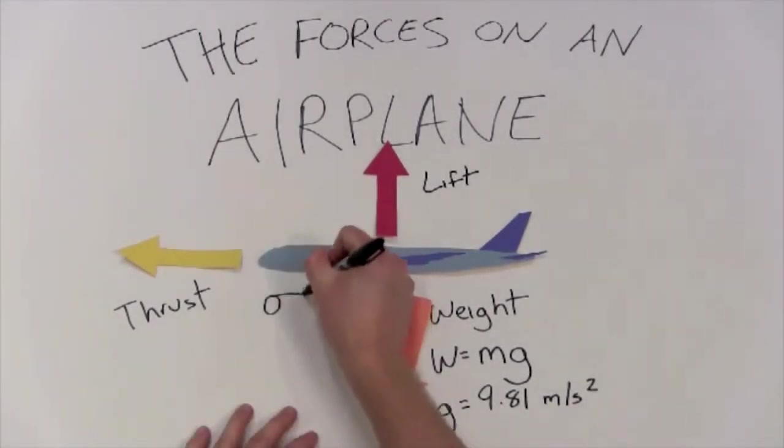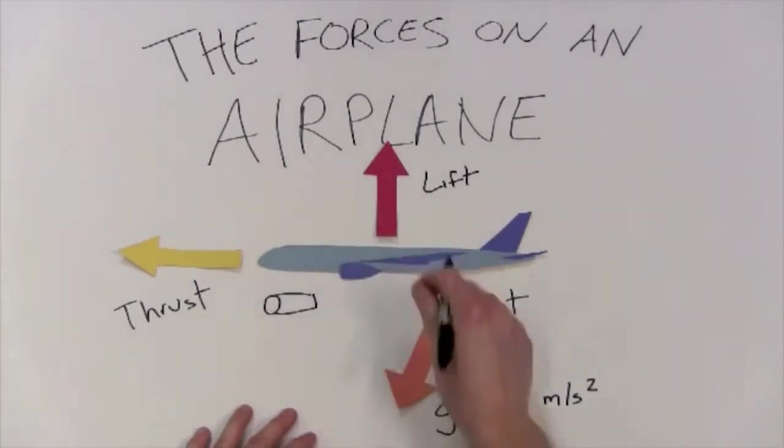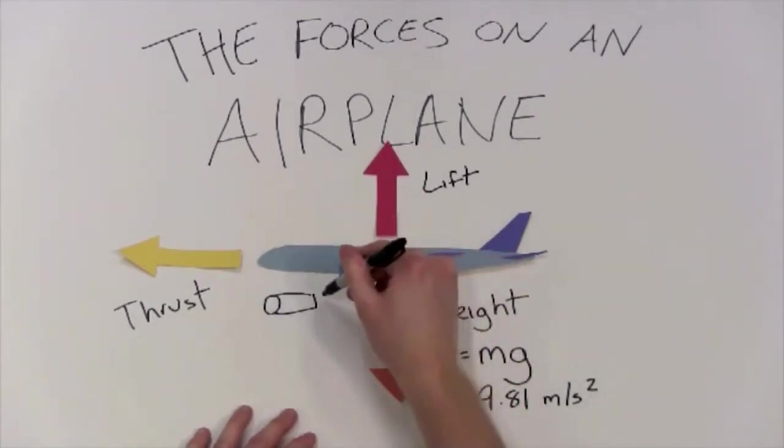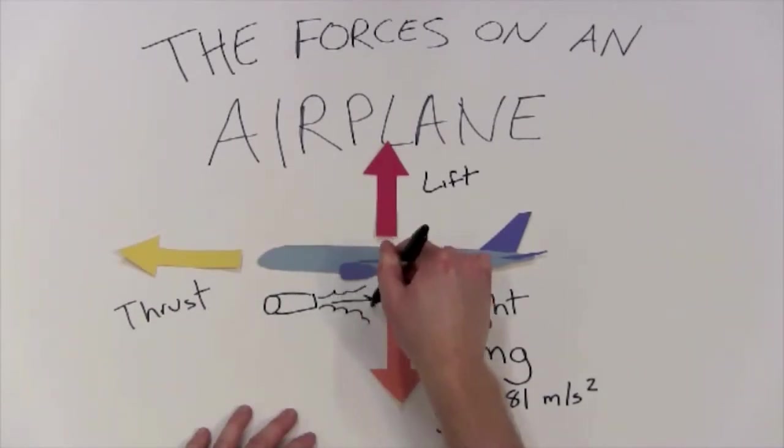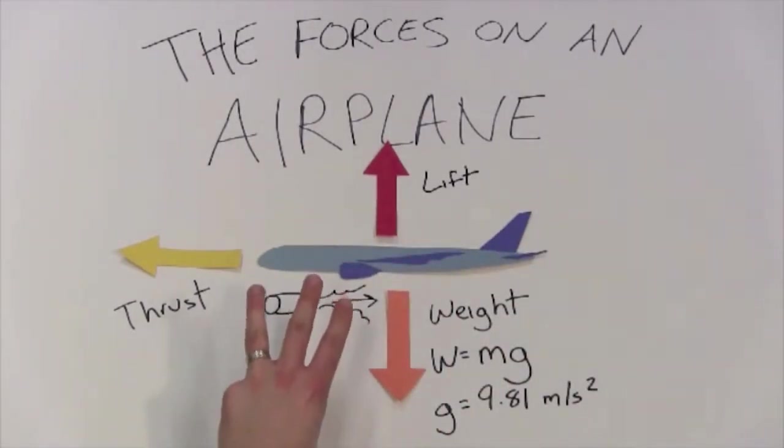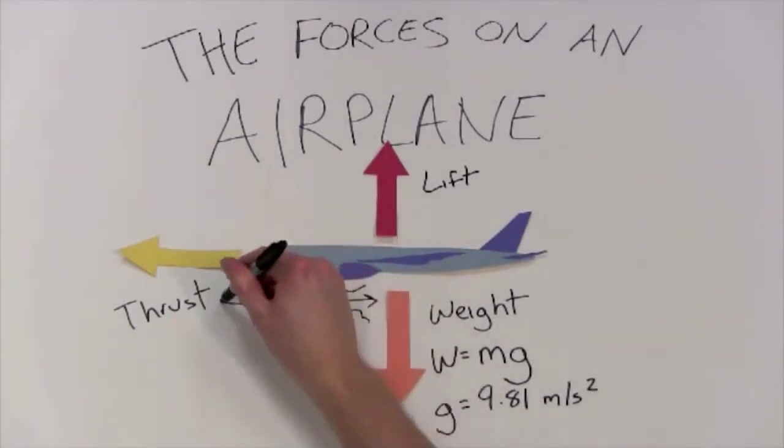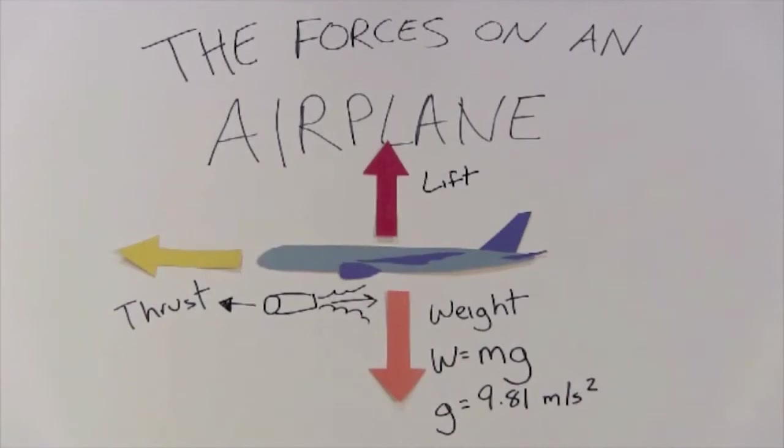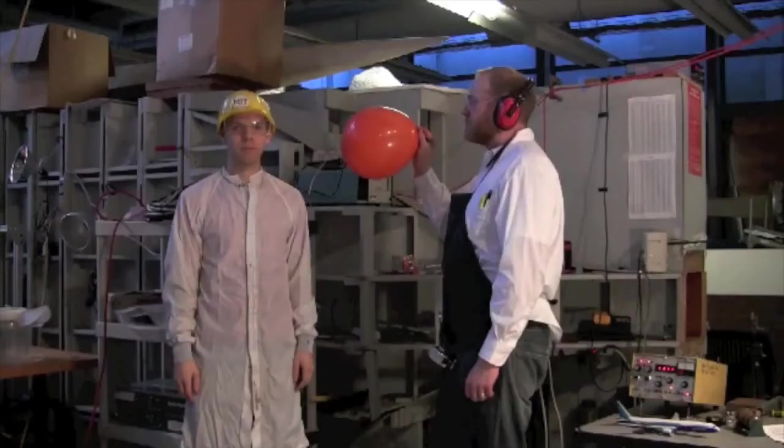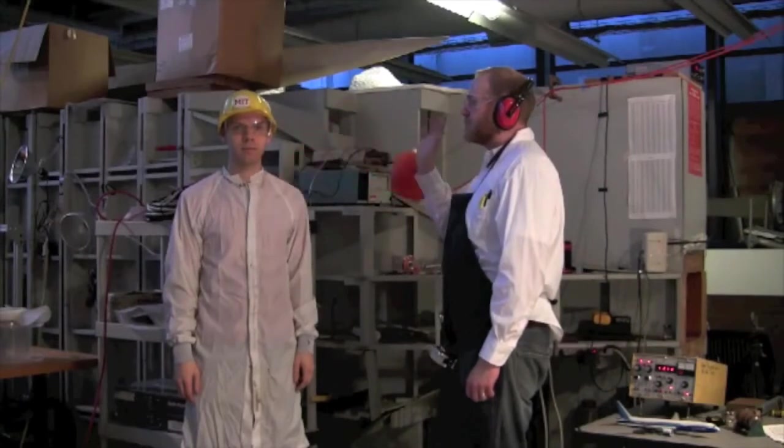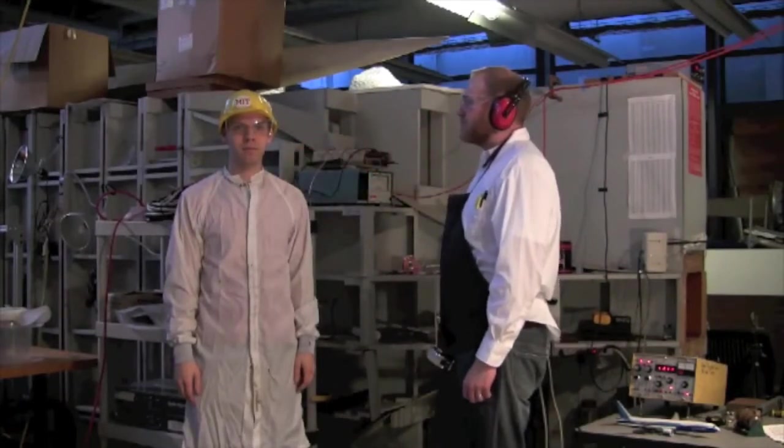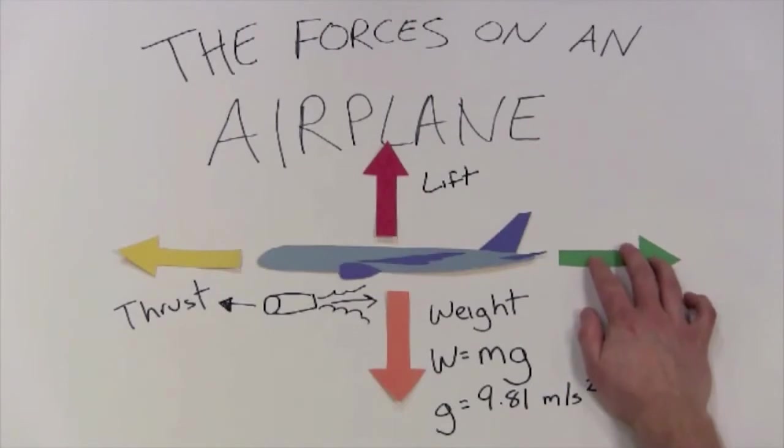Whatever the type of engine, they all work by the same principle. So we draw a little side view of an engine here. The engines accelerate air out the back this direction, and by Newton's third law there's an equal and opposite reaction and that's the thrust force pushing the aircraft forward. This is really the same thing that happens when you blow up a balloon and you let it go. The air comes out the back and the balloon moves forward.